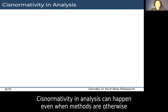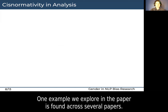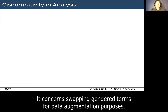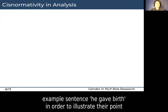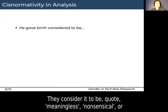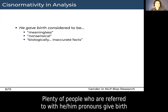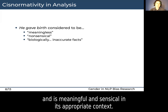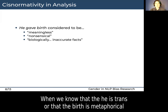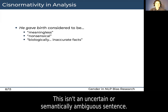Cisnormativity in analysis can happen even when methods are otherwise not cisnormative or exclusive of trans and non-binary people. One example we explore in the paper concerns swapping gendered terms for data augmentation purposes. These papers caution against swapping all terms and give the example sentence, 'he gave birth,' in order to illustrate their point. They consider it to be, quote, meaningless, nonsensical, or presenting biologically inaccurate facts. But plenty of people who are referred to with he/him pronouns give birth, and have for a really long time. It's completely biologically accurate and is meaningful and sensical in its appropriate context — when we know that the he is trans or that the birth is metaphorical, this isn't an uncertain or semantically ambiguous sentence.